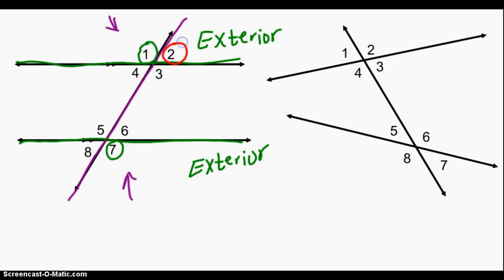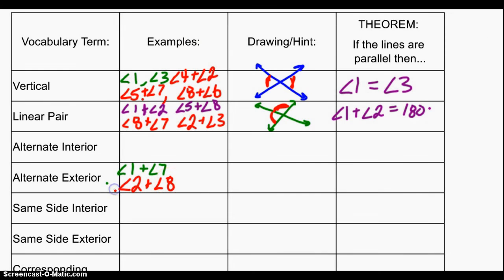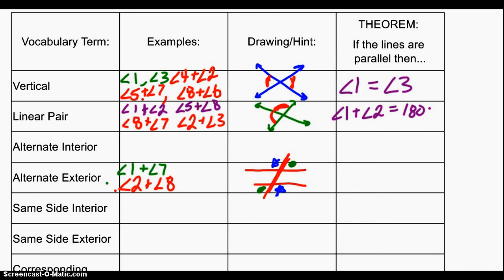Hopefully you guessed it: two and eight are also alternate exterior angles because they are on the exterior of the two parallel lines and on opposite — alternate — sides of our transversal. If you draw your parallel lines with a transversal, alternate exterior angles could be here and here — they look like they're about the same size, and in fact they are. If two lines are parallel, then alternate exterior angles are congruent. So angle one equals angle seven.